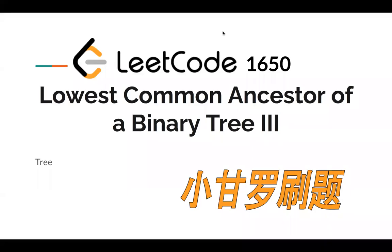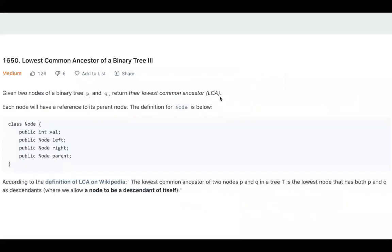Hello, everyone. Let's take a look at the Lowest Common Ancestor of a Binary Tree III. For this problem, let's look at the description since it's a locked question. Given two nodes of a binary tree, p and q, we need to return the lowest common ancestor.